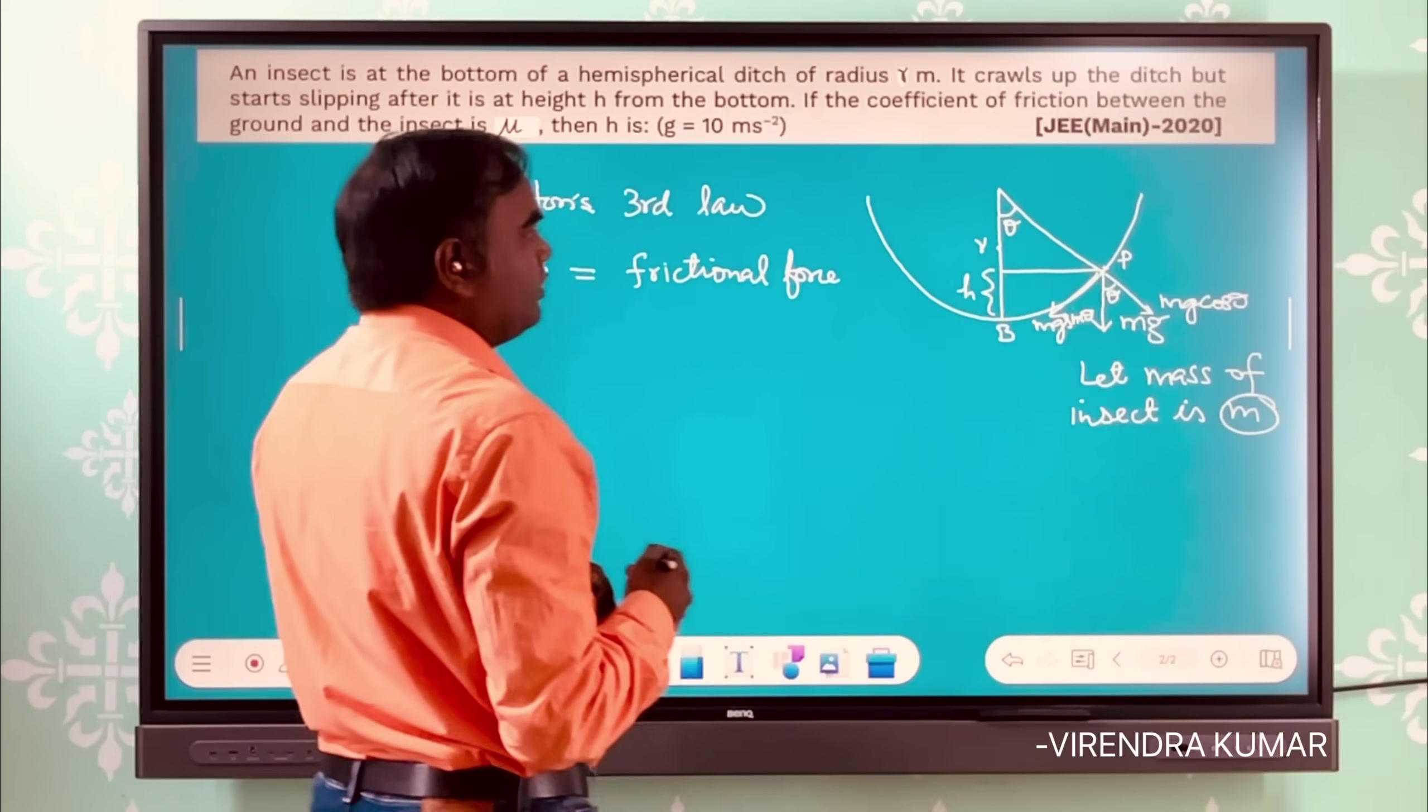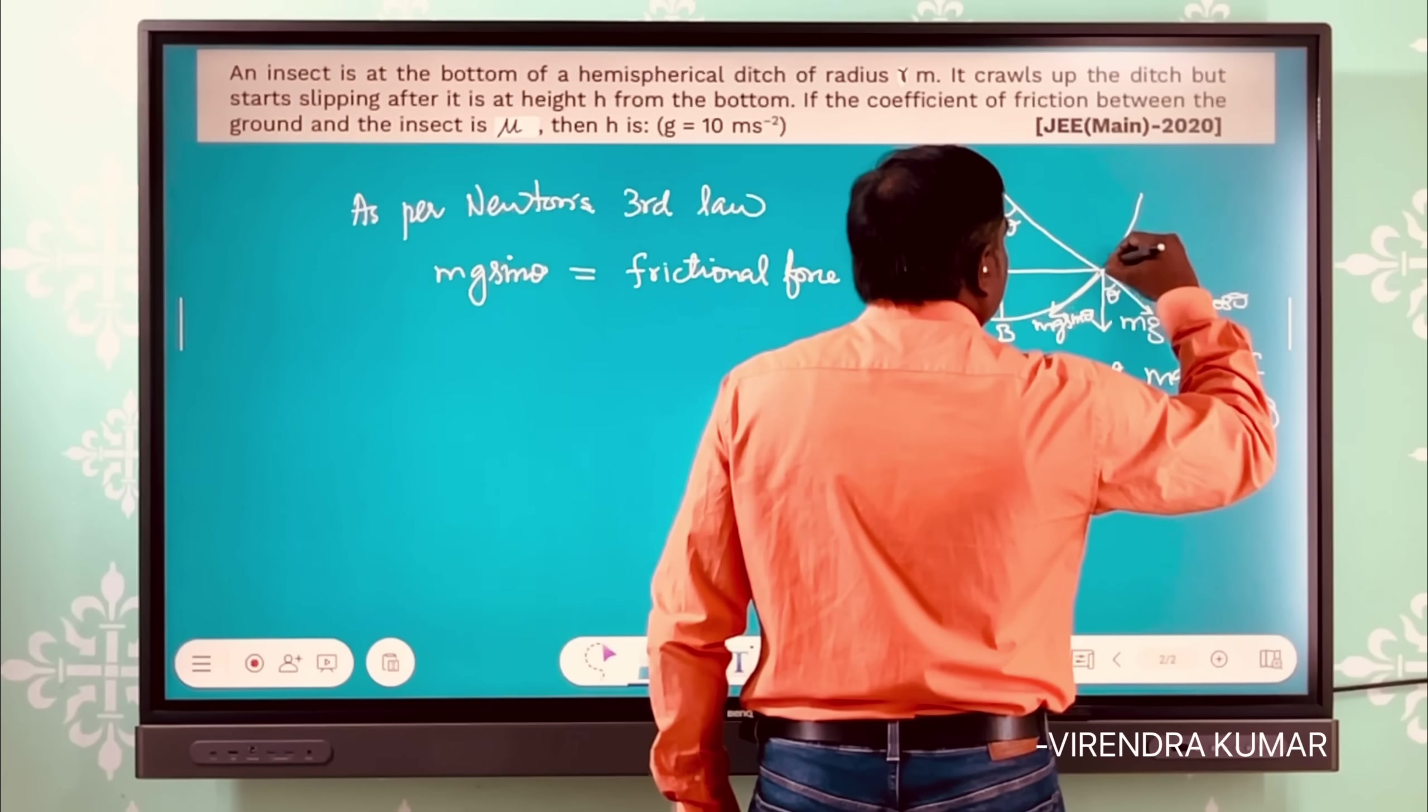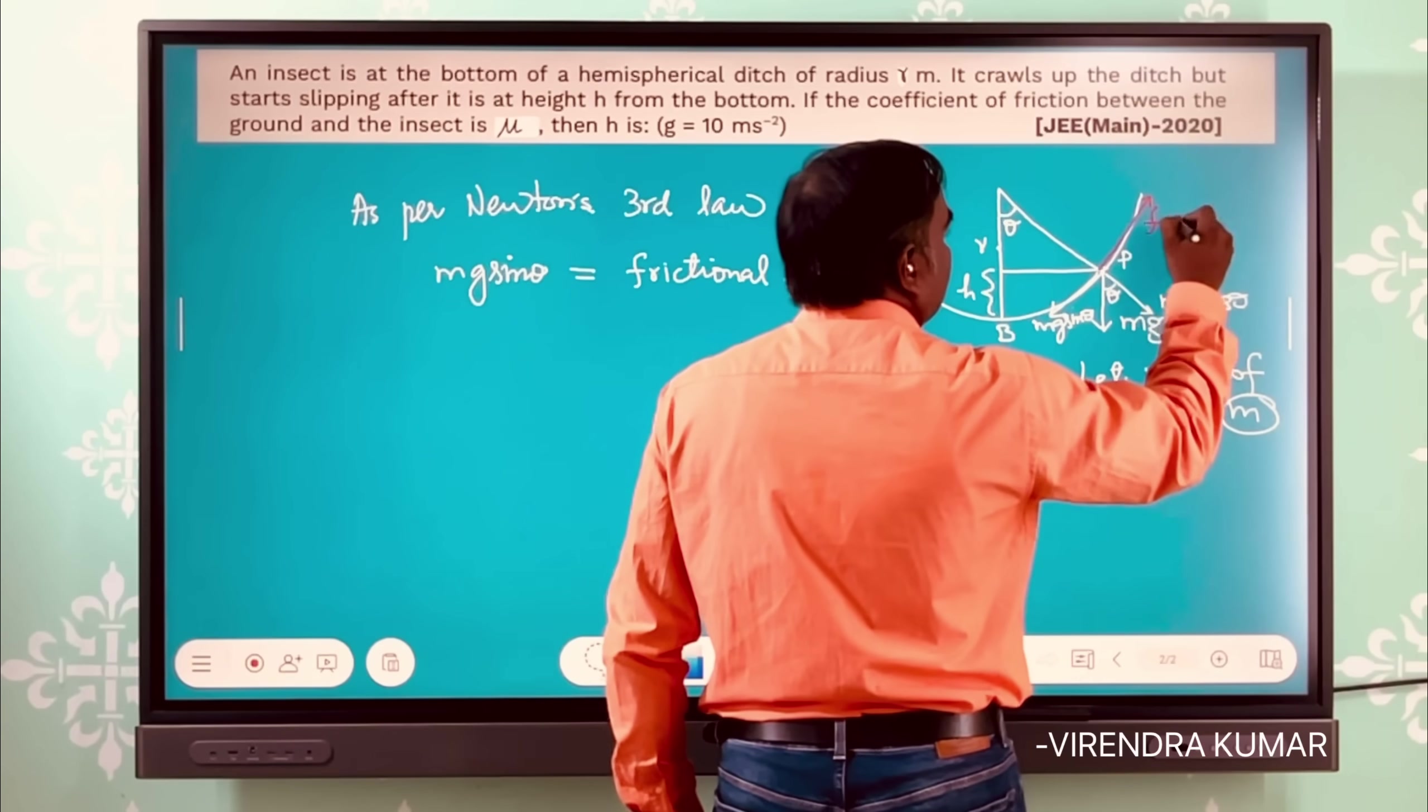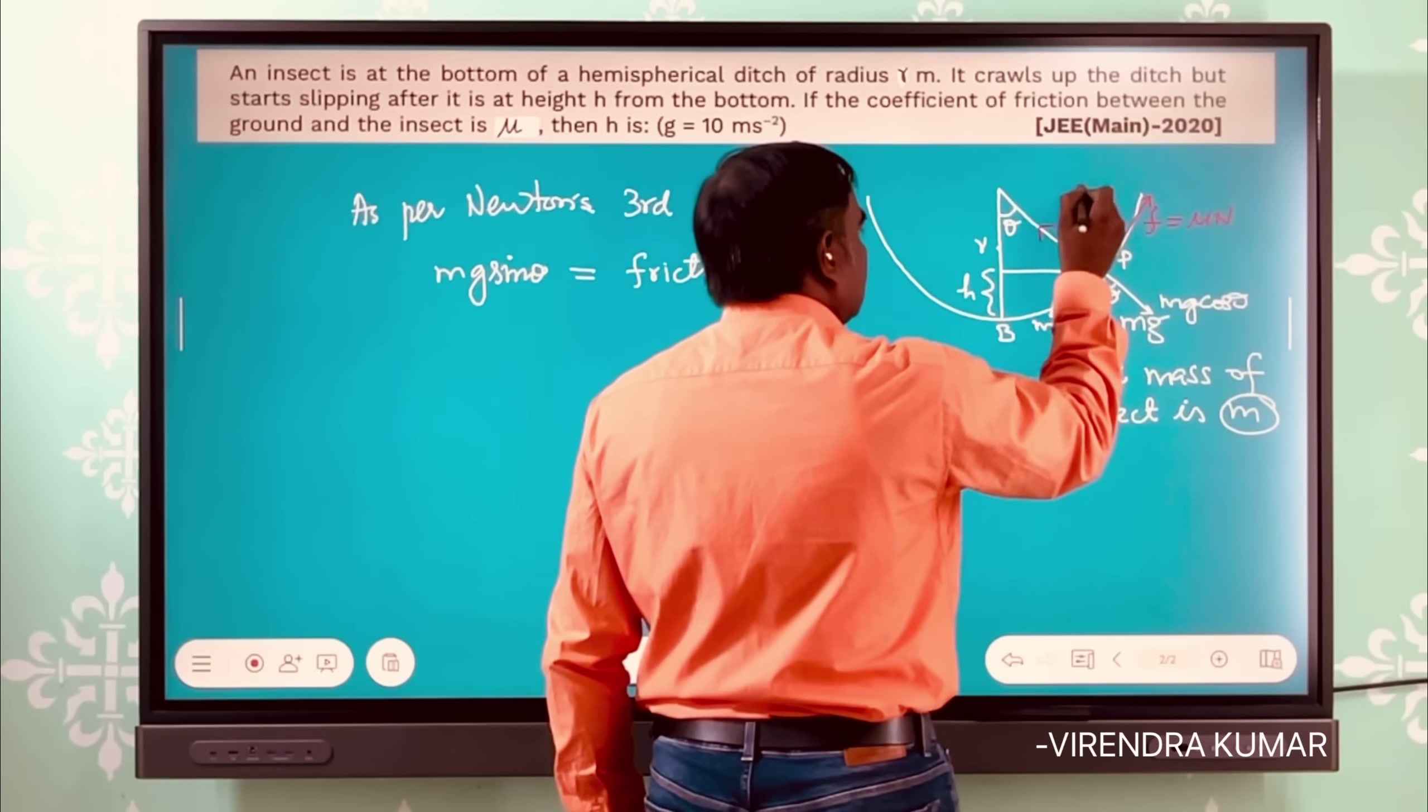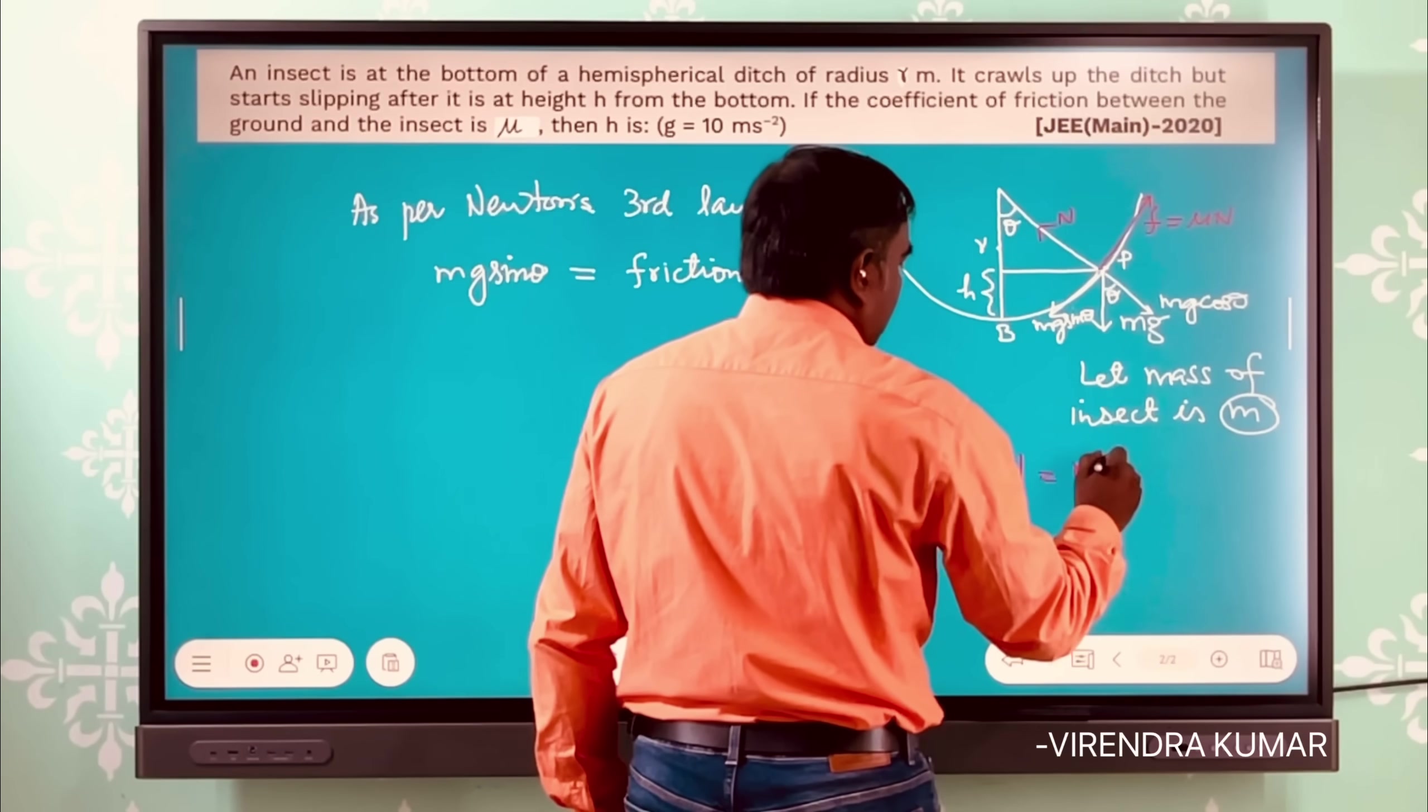...this mg sin θ is equal to friction force F, because the friction will be in this direction. And this friction force F will be equal to μ into normal reaction, and this reaction will be around this, so this n is equal to mg cos θ.